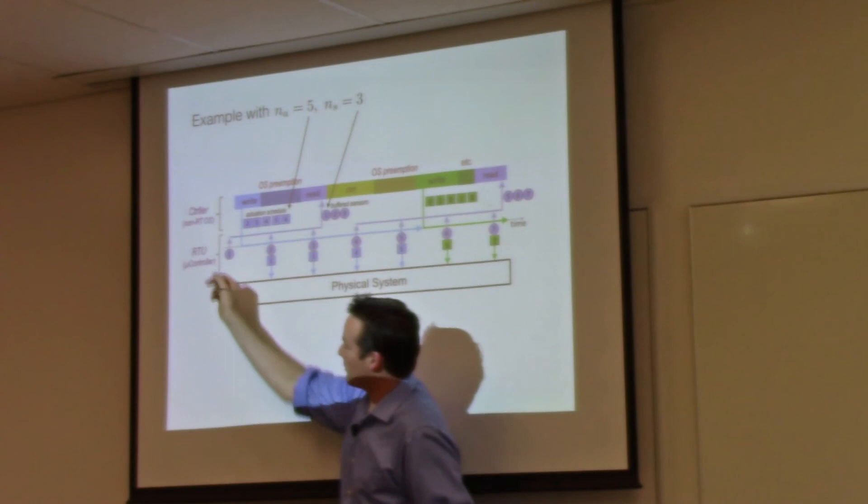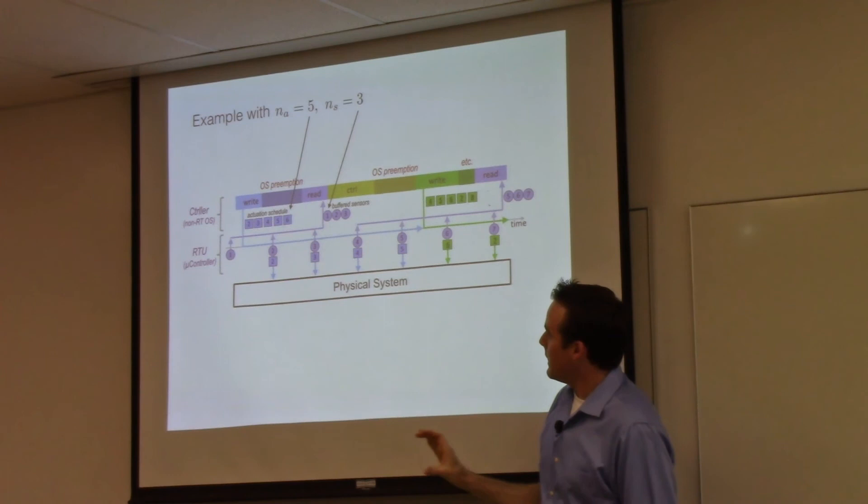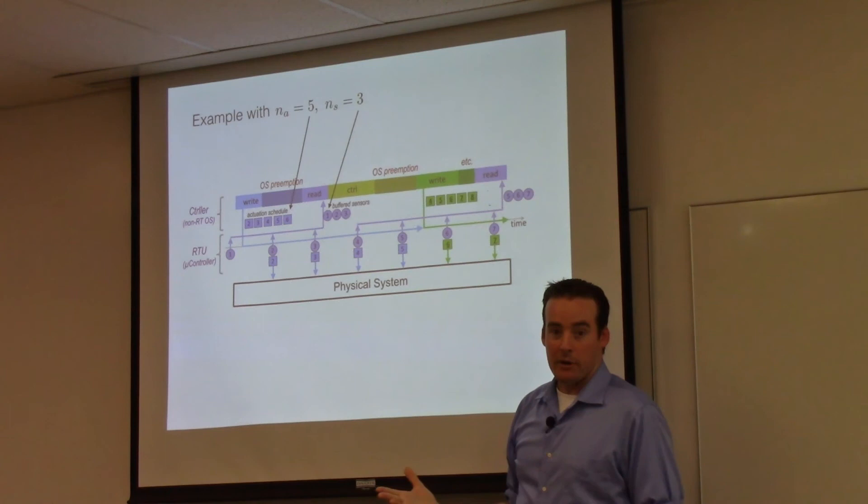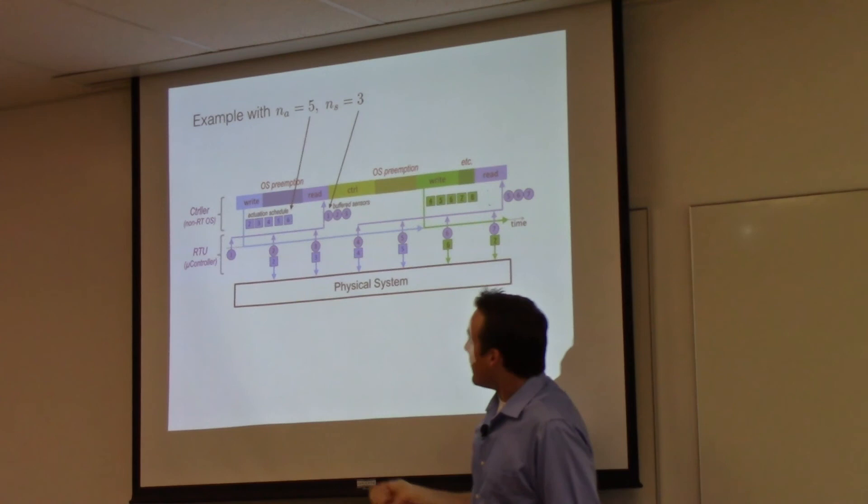Here's an example. At the top is the controller running on a non-real-time operating system. It's doing the same stuff as before, reading and writing and running a control thing. Sometimes it's getting preempted. Here's the RTU running below it on a dedicated microcontroller, and it's the RTU that interfaces with the physical system. For example, the controller sends an actuation schedule of maybe these five actuator values to be executed at time step two, three, four, five, and so on. Once the RTU gets this buffer, it will execute those actuator values at those times, even though the controller might be asleep or something.